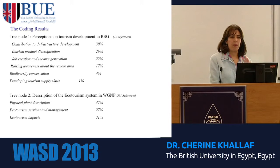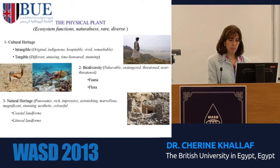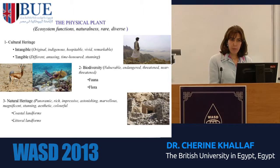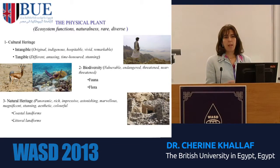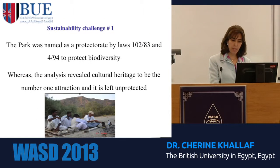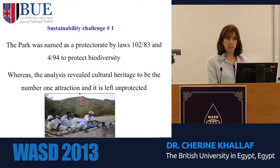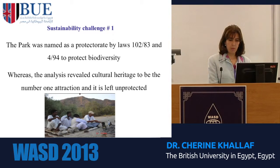Going directly to the results in plain words — the first thing we noticed about the physical plant when we examined the case of Wadi al-Gamel is that cultural heritage represents the most important type of attraction. It starts with the intangible cultural heritage, followed by the tangible cultural heritage. The second attraction was biodiversity, and the third was the natural heritage. The only problem is that this is a protected area, declared in 2003 by laws 102 for the year 1983 and 4 for the year 1994, to protect biodiversity — which means that we are protecting the wrong attraction.